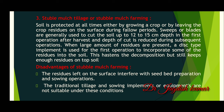The third type is stubble mulch or stubble mulch farming. Soil is covered at all times either by growing a crop or by leaving the crop residue on the surface during fallow periods. Sweeps or blades are generally used to cut the soil up to 12 to 15 cm depth in the first operation after harvest. Depth of cut is reduced during subsequent operations. When large amounts of residues are present, a disc type implement is used for the first operation to incorporate some of the residue into the soil. This hastens decomposition but still keeps enough residue on the soil surface. The disadvantages of stubble mulch farming: 1. Residue left on the surface interferes with seedbed preparations and sowing operations. 2. Traditional tillage and sowing implements or equipment are not suitable under these conditions.